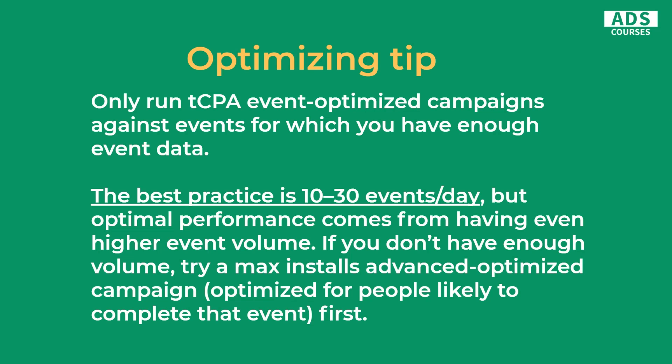Only run target CPA event-optimized campaigns against events for which you have enough data. The system needs sufficient conversions to optimize, so the best practice is to have at least 10 to 30 events per day — though more is better. If you don't have enough volume, try a Max Install Advanced bidding type campaign to generate more events, or select an in-app action that occurs before your final conversion goal. For example, instead of targeting a purchase event with only two per day, target earlier funnel events like viewing a premium screen or adding to basket.